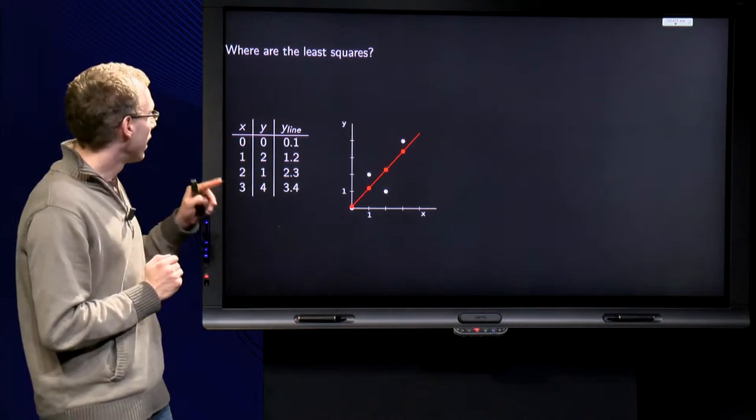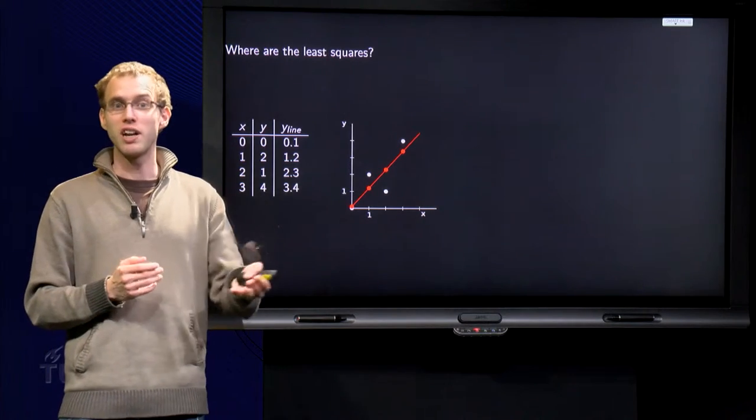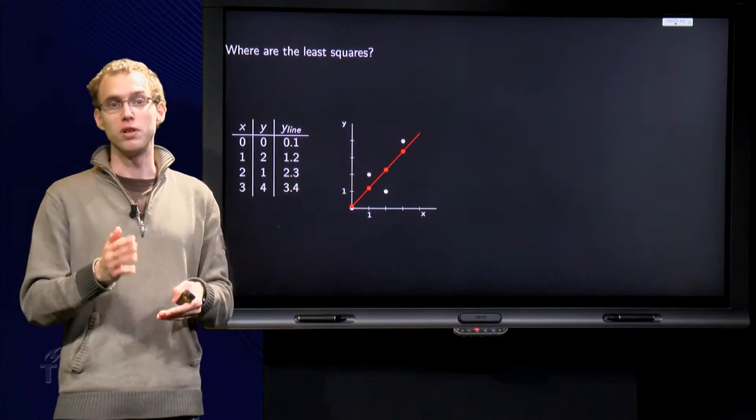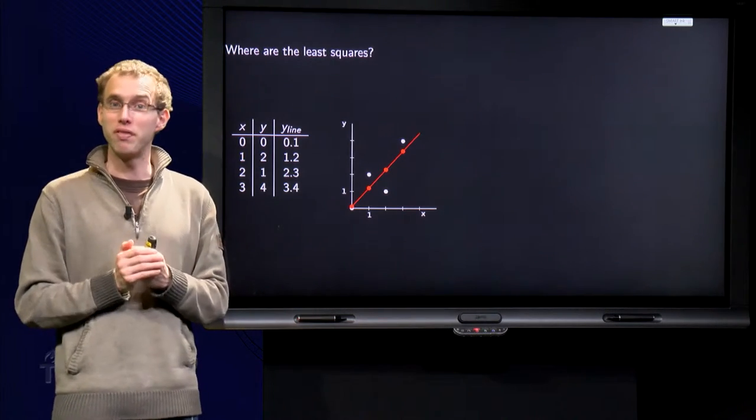So here we have our x's and y's, our data points, and we have found the least squares line y equals 0.1 plus 1.1 times x. Now I want to draw the data points and the line in one figure.